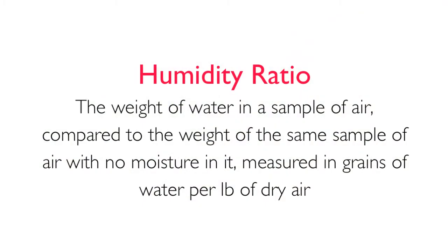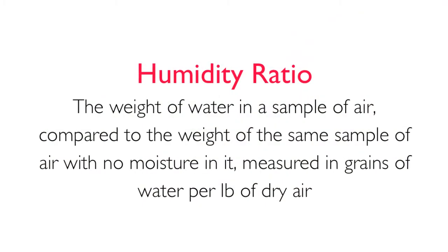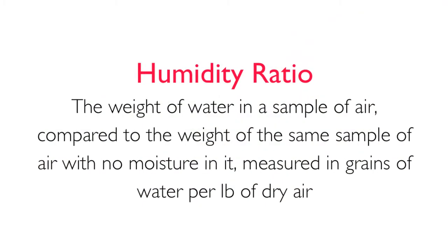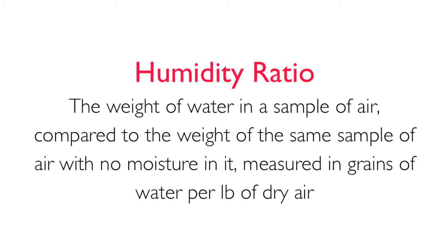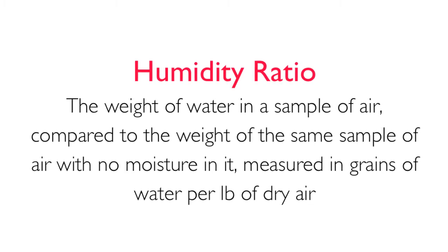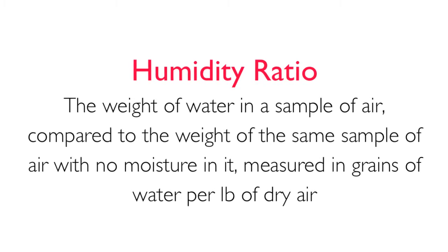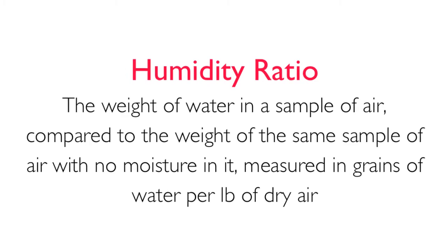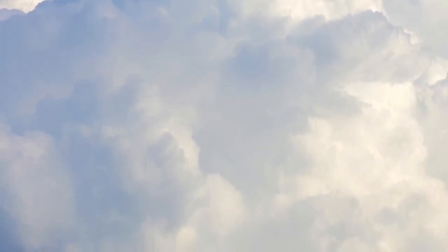Humidity ratio is the weight of water in a sample of air compared to the weight of the same sample of air with no moisture in it, measured in grains of water per pound of dry air. For example, at 70 degrees Fahrenheit with 30% relative humidity, the humidity ratio is 34 grains of water vapor per pound of dry air.